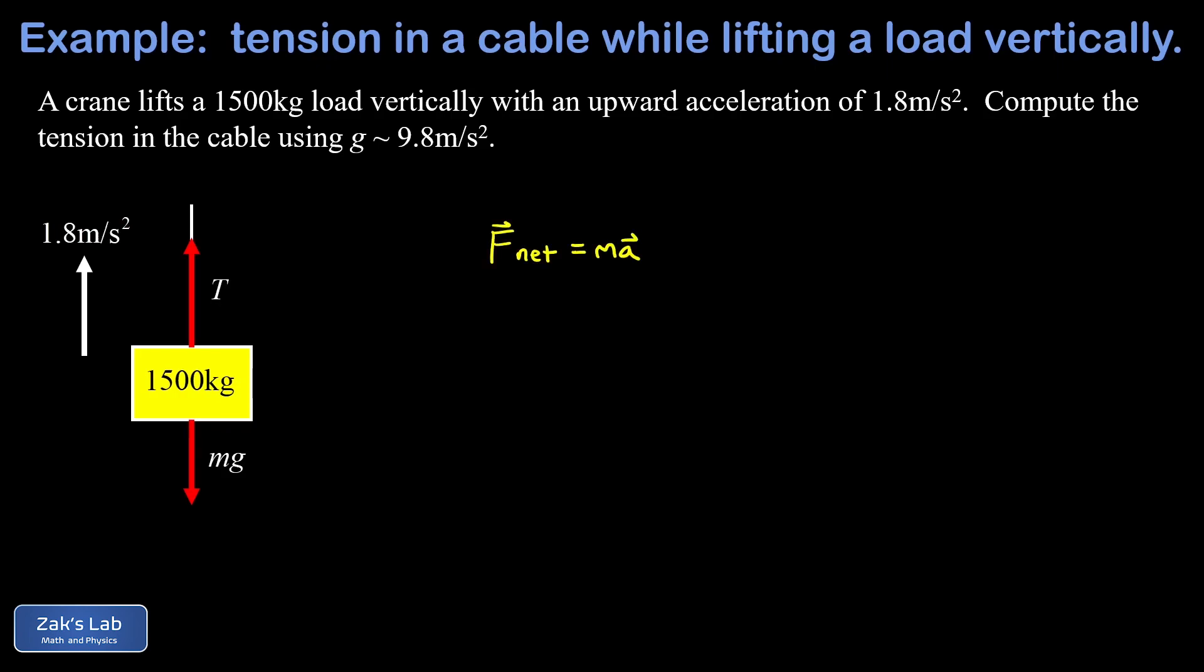Newton's second law says that f net is equal to ma. Now this really is a vector equation, but when we're dealing with a one-dimensional problem we can use signs to keep track of direction, so we're going to call upward positive and downward negative.